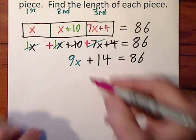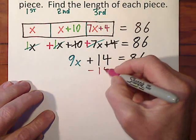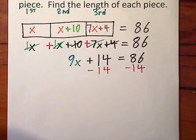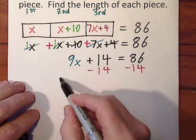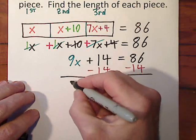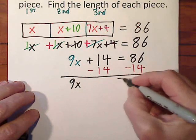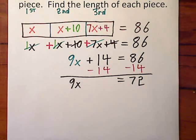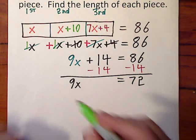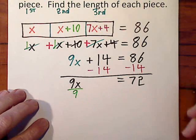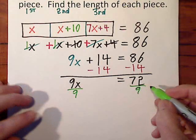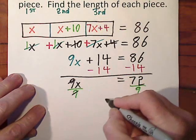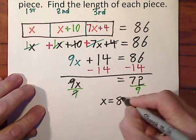We're solving for x. So let's get rid of the 14. And now we have 9x is 72. You got to get rid of that 9. And now we know 9 goes into 9 once. We know that x is equal to 8.